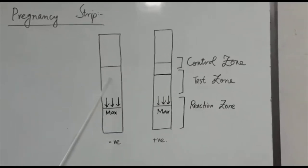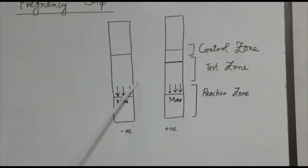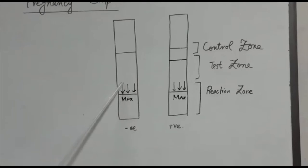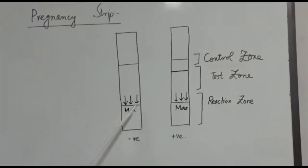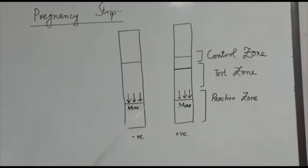We have the test zone. This contains polyclonal anti-human chorionic gonadotropin antibodies plus a dye substance that will react only when the antibodies are activated, indicating pregnancy.